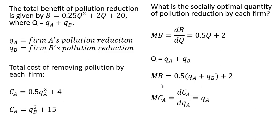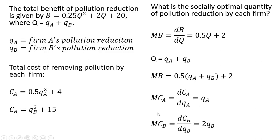Next, we get the marginal cost of pollution reduction for each firm by taking the derivative of the cost equation. Taking the derivative of firm A's cost equation, we get just Q_A. Doing the same for firm B and taking the derivative of firm B's cost equation, we get the corresponding result.